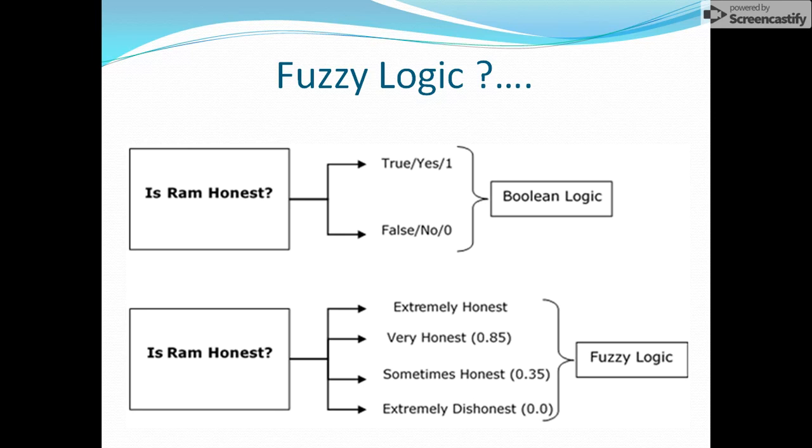But what we can do in fuzzy logic is precisely we can give different kinds of answers as a human can give. Like, is Ram honest? It is extremely honest, that is the membership value of 1. Very honest, 0.85. Sometimes honest, 0.35. And extremely dishonest, 0.0. So these are the different values that we are giving, the membership values. On the basis of which we are defining how close that particular person or particular answer is towards the question. And that is what the beauty of fuzzy logic is.